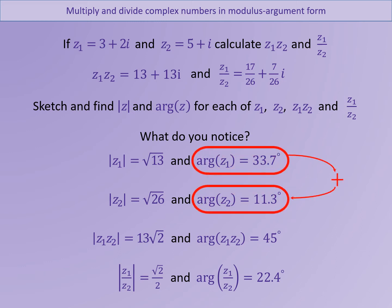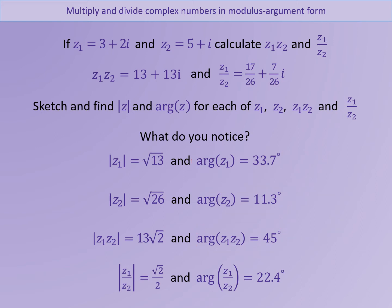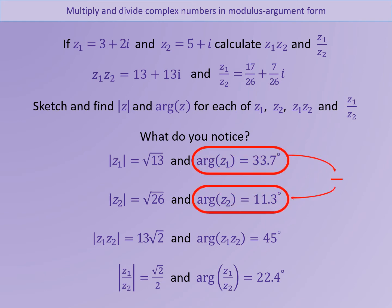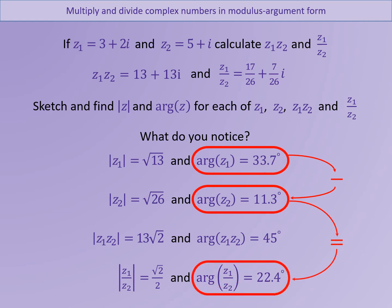Now looking at the arguments, there is also a link, but this time it involves adding. So if we add the argument of Z1 to the argument of Z2, the answer adds up to the argument of the product Z1·Z2. Similarly, we can subtract: if we do 33.7 take away 11.3, the answer we get is 22.4, which is the argument of the quotient.